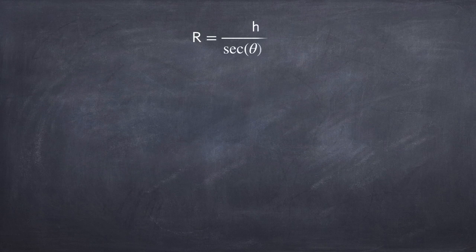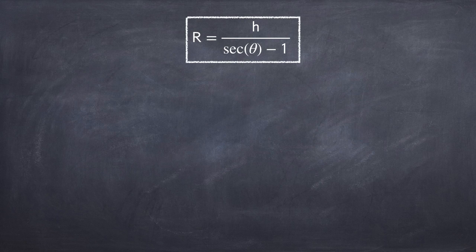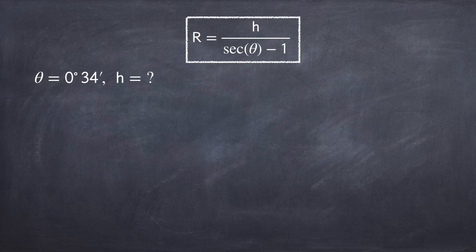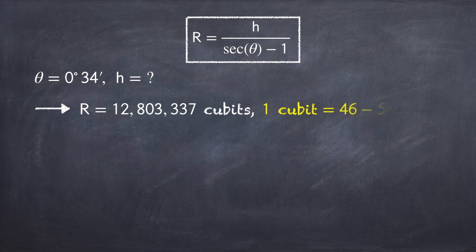So Al-Biruni carried out his experiment and measured the angle of his line of sight to be 34 arc minutes. And I actually don't know what the height of his mountain was. But whatever it was, he came up with the radius of the earth being just under 13 million qubits.